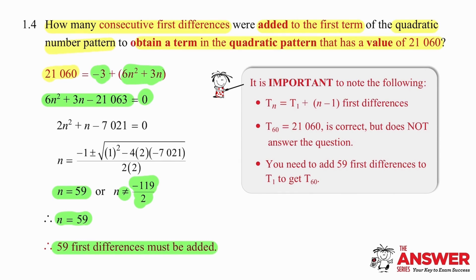Now it is possible that you might have chosen to work out that in fact the 60th term of the quadratic pattern has a value of 21,060. If you chose to do this you're on the right track but you haven't answered the question because you weren't asked which term has that value but rather how many differences are added to the first term.